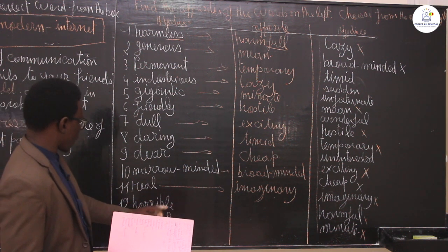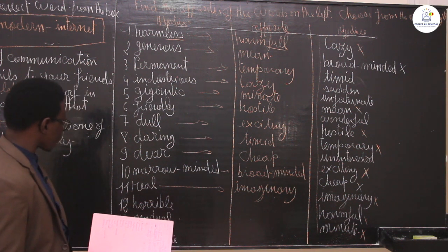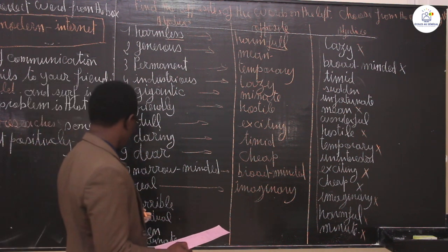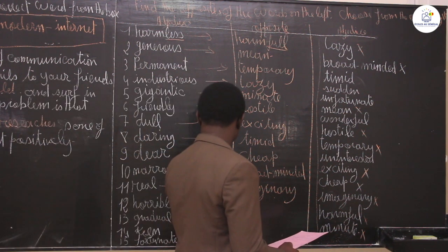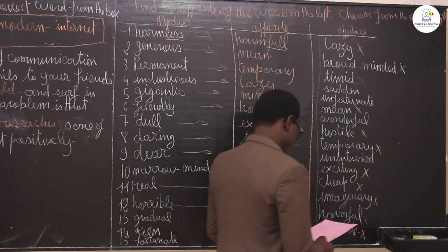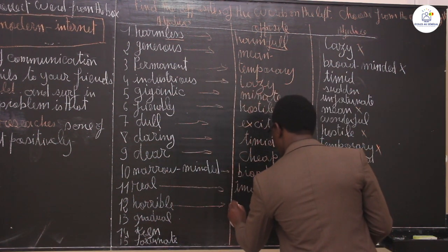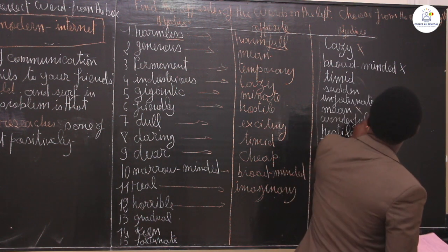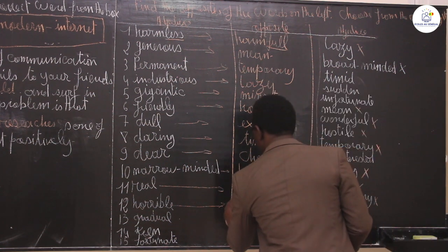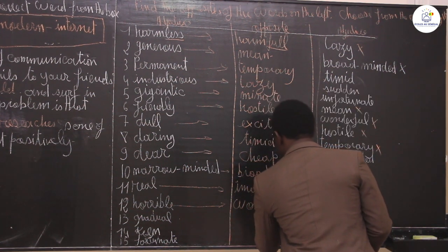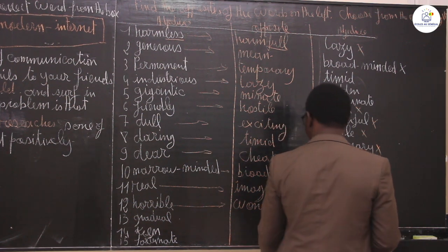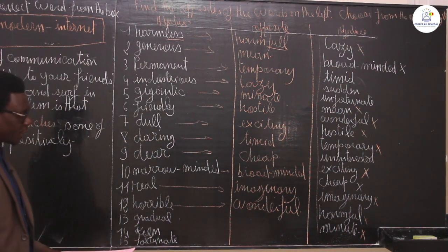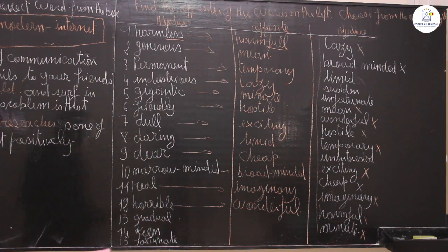You have horrible. What is the opposite of horrible? Horrible is something negative, something bad. The contrary of horrible is wonderful — something which is good, excellent, and nice.